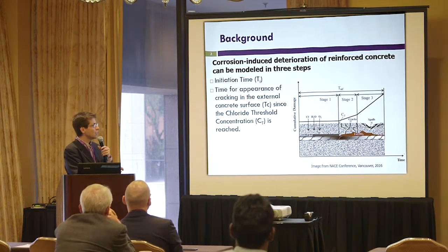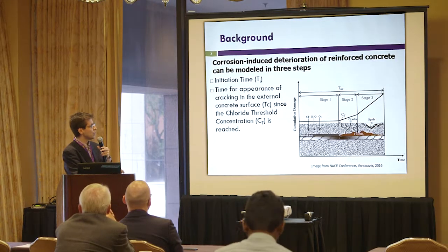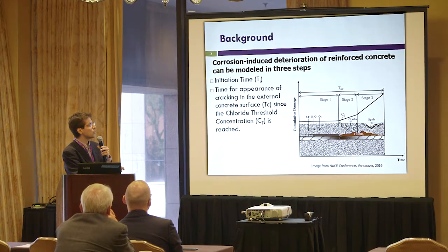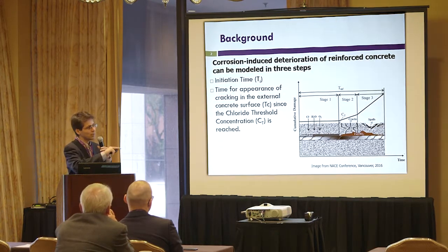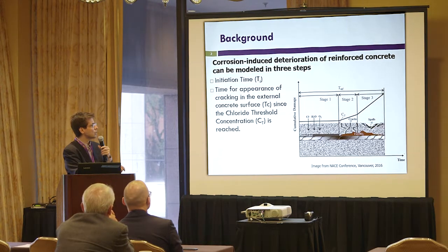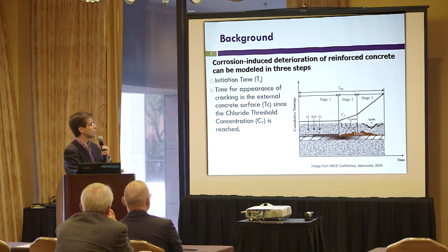Chloride is not directly in the corrosion reactions, but oxygen and iron are. What chloride does is induce the breakdown of the passive layer, moving into what we call the initiation stage — where we have an intact passive stage — and then into the activation and propagation stage, which is the actual corrosion. Instead of forming a beautiful homogeneous passive layer, you now form a very high-volume corrosion product that causes internal stresses in the concrete, leading to cracks and spalling.